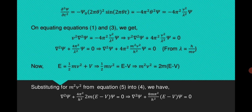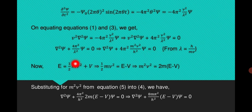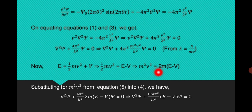On equating equations 1 and 3, we arrive at: ∇²ψ + (4π²/λ²)ψ = 0, and similarly ∇²ψ + (4π²m²v²/h²)ψ = 0. As we know, total energy equals kinetic energy plus potential energy. So kinetic energy of a moving particle is ½mv², and potential energy is V. Therefore ½mv² = E − V, giving m²v² = 2m(E − V).